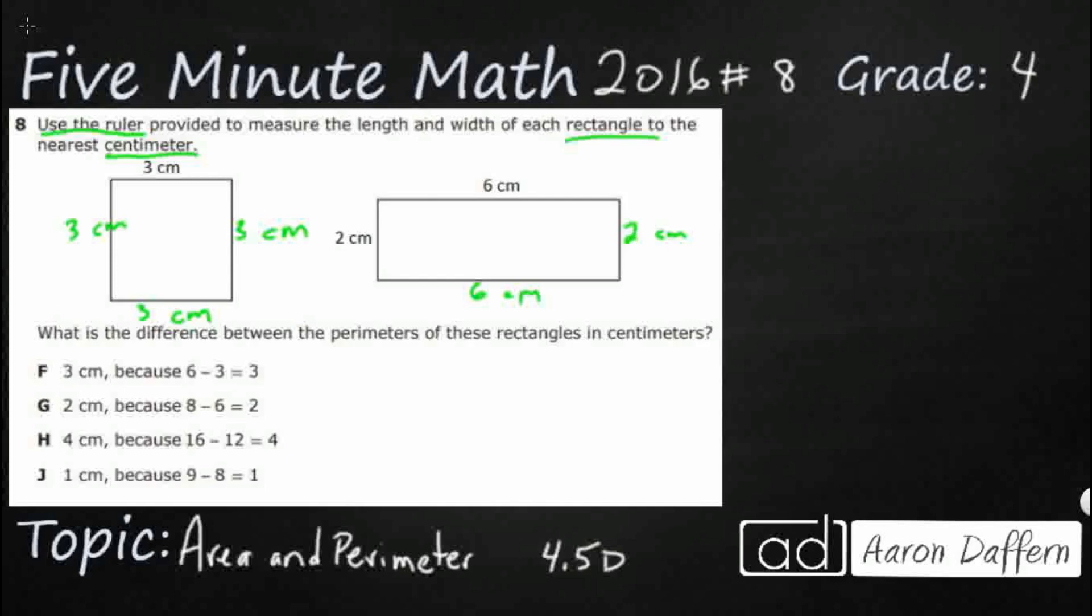So we need to find the difference, and if we get stuck on what difference means, take a look at all of these answers F, G, H, and J. The difference, and it says because 6 minus 3 equals 3, because 8 minus 6 equals 2, 16 minus 12 equals 4. So if we ever get stuck, take a look at what each of these answers give us as the difference.